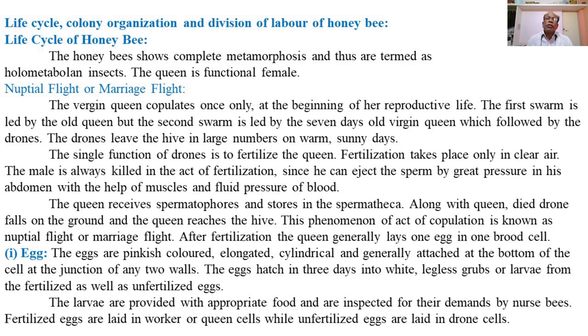So all four stages of the life cycle — egg, larva, pupa, and adult — are involved in the development of the honeybee.